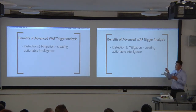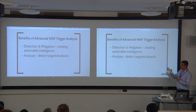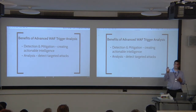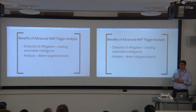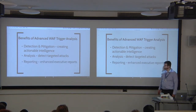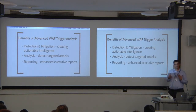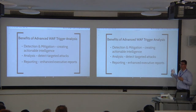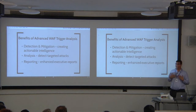There are three things we're going to talk about. The first method is detection and mitigation - creating actionable intelligence, quite similar to what we just saw. The second part is analysis: we take all the WAF trigger data and try to find out if someone is targeting a specific part of my application, or if someone knows a vulnerability I have and is trying to tackle it. These kinds of insights can only be achieved by doing post-processing of the WAF triggers. The third thing is reporting - if we take all those triggers and find out what really happens out there, what the threats on our application are, we can create an enhanced executive report.